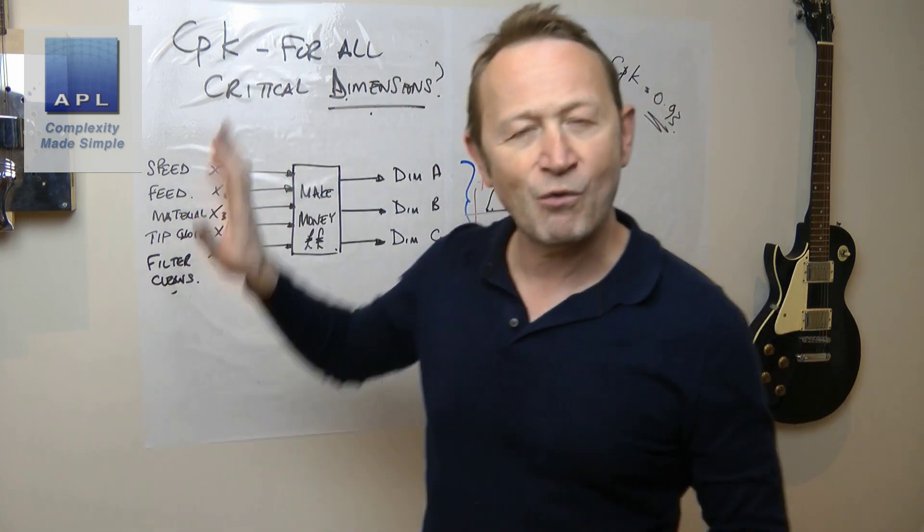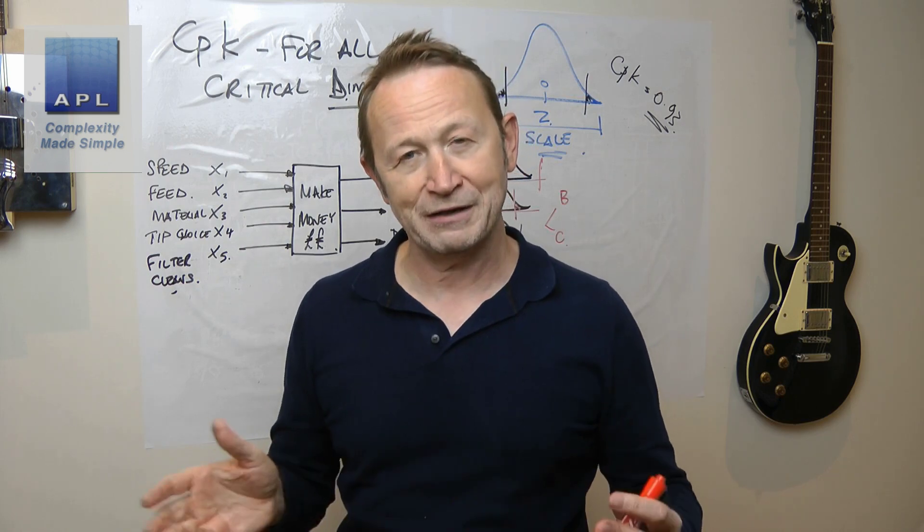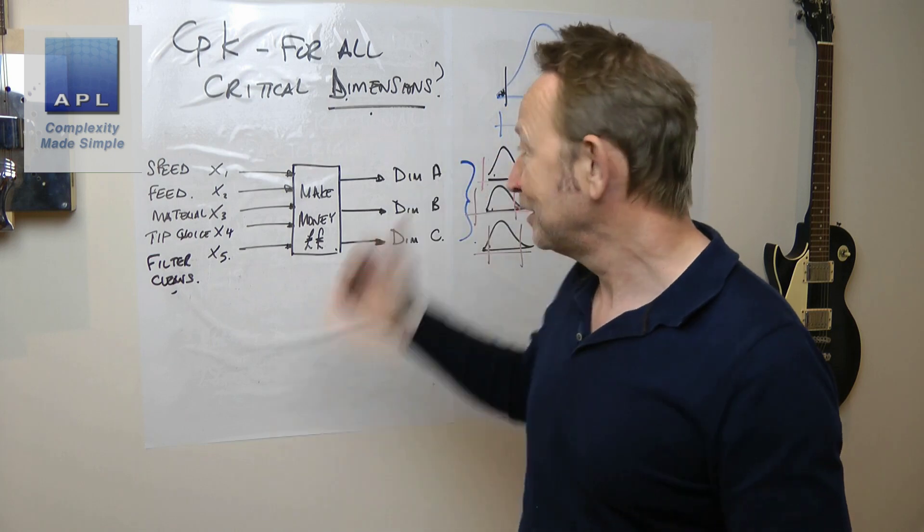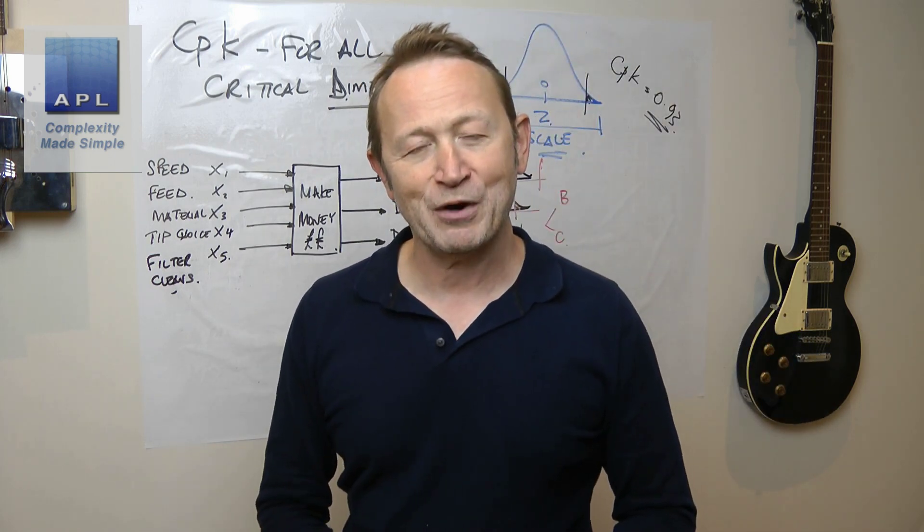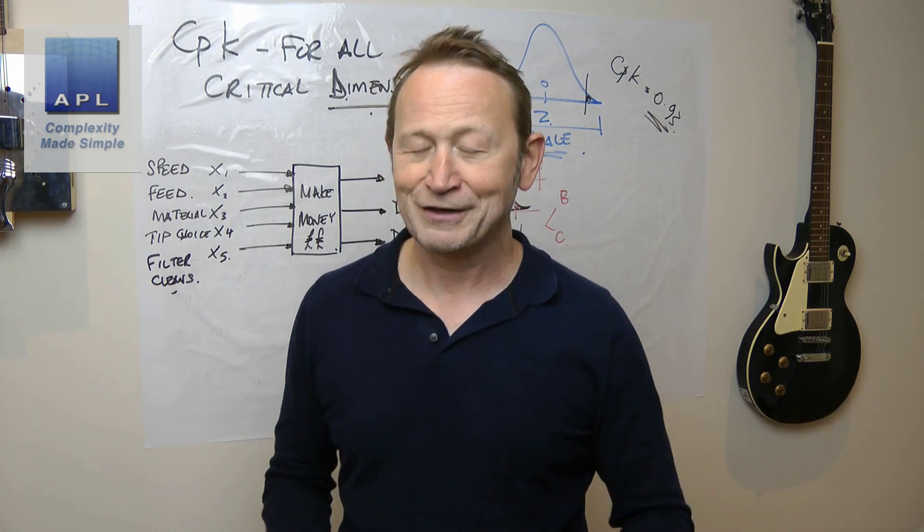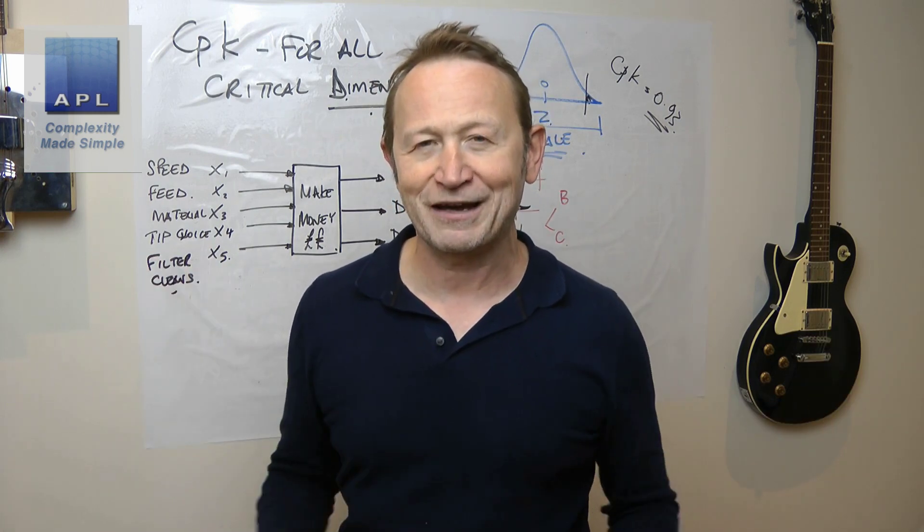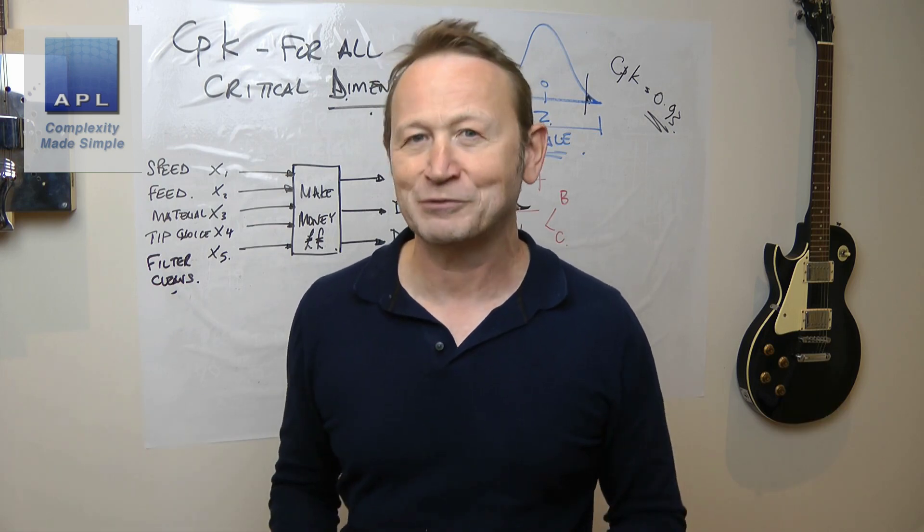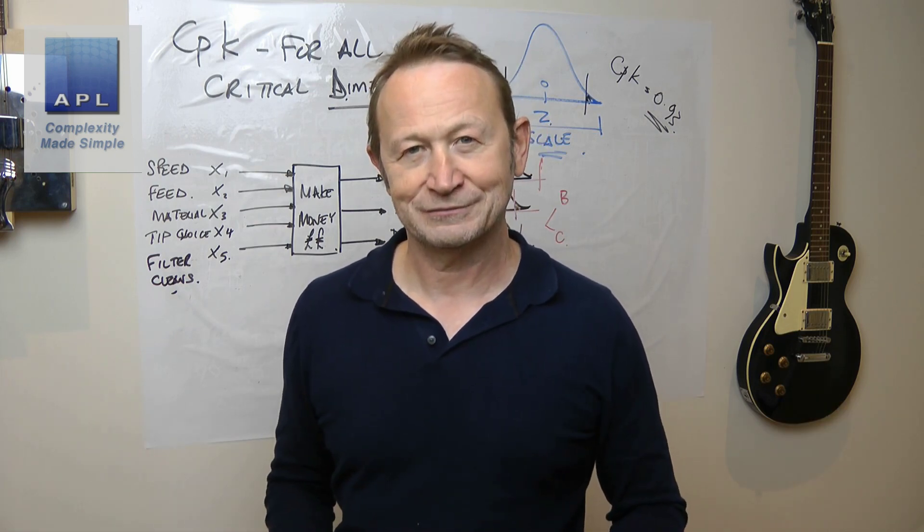So there is no way of putting CPK into one number. And even if there was, you wouldn't want to do it anyway because you'd want to know which ones are giving you a problem. In answer to your question, CPK is an individual value for an individual dimension.